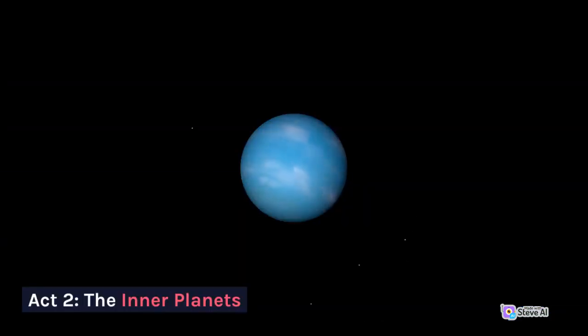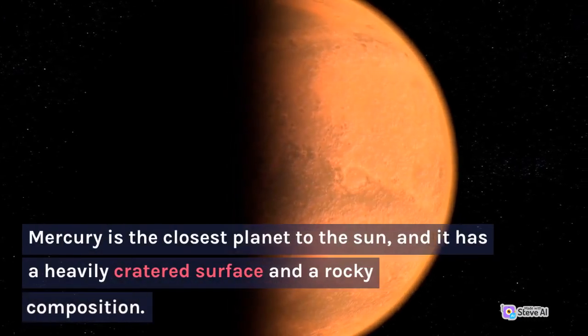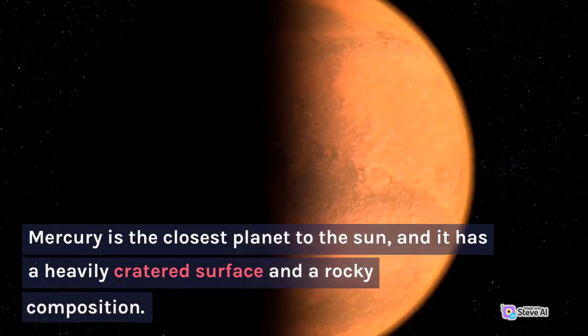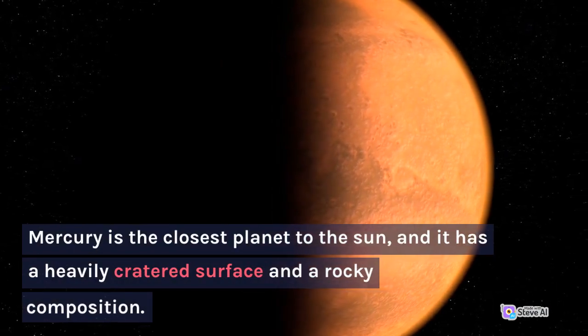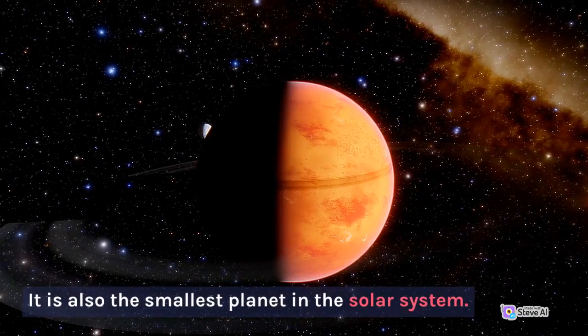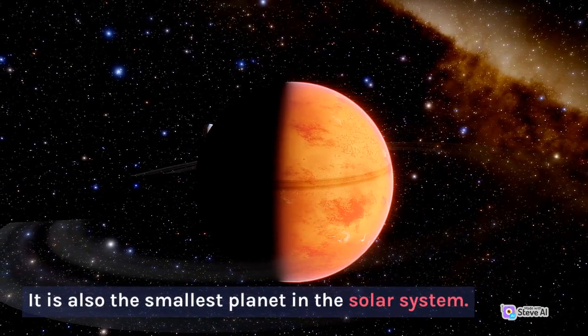Act 2 The Inner Planets. Mercury is the closest planet to the sun and it has a heavily cratered surface and a rocky composition. It is also the smallest planet in the solar system.